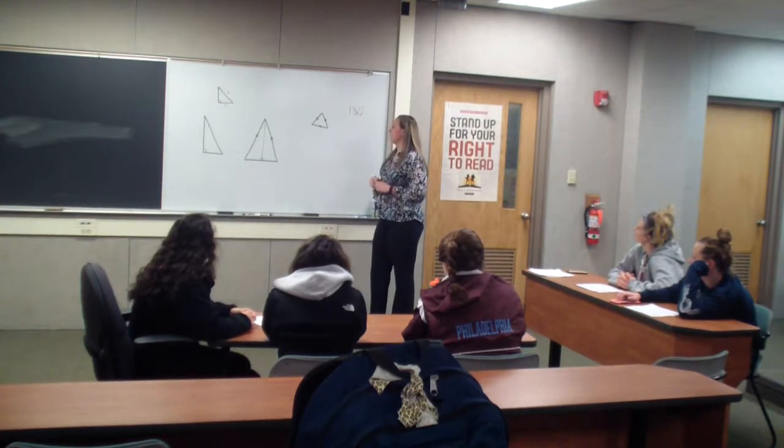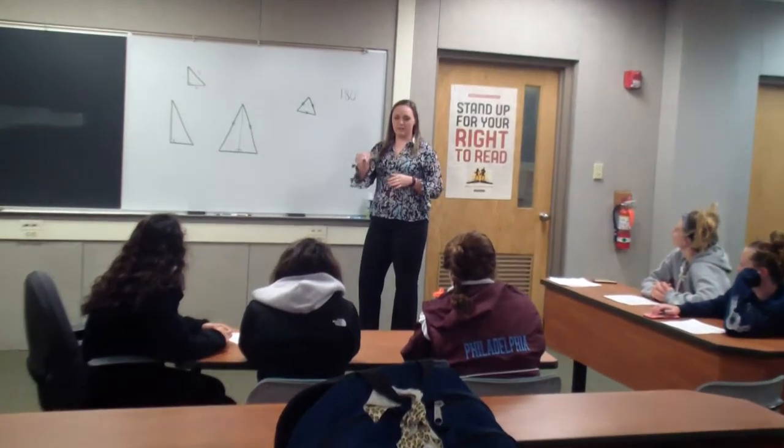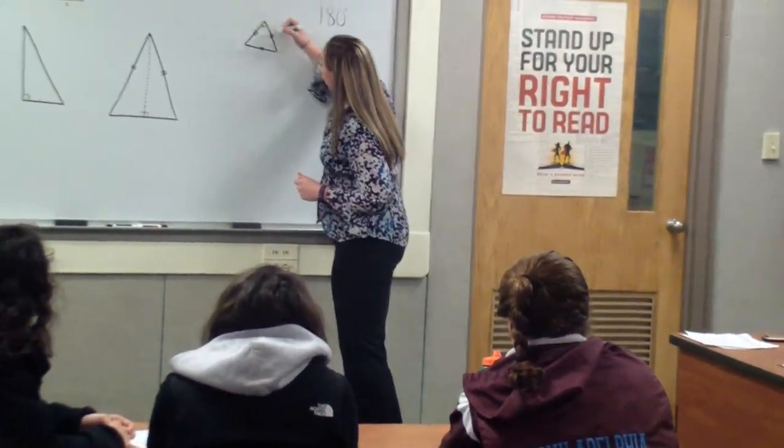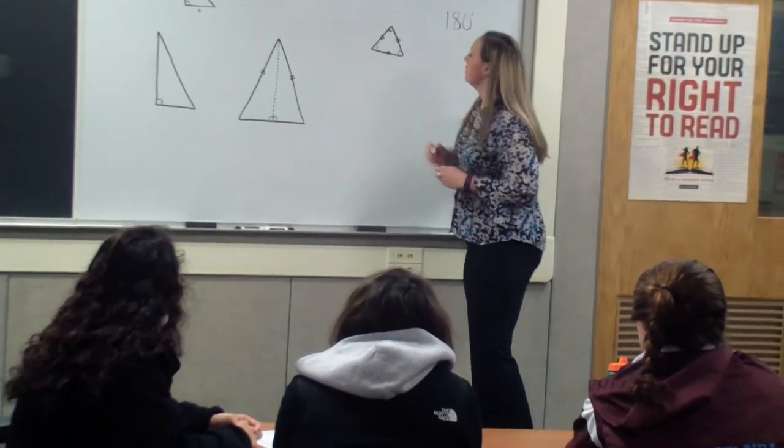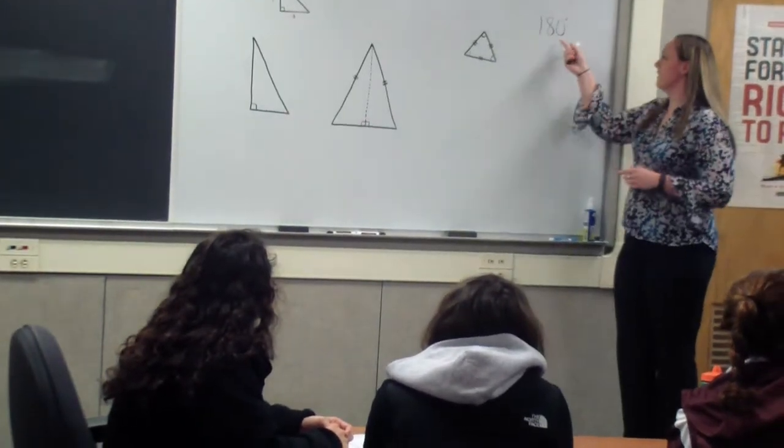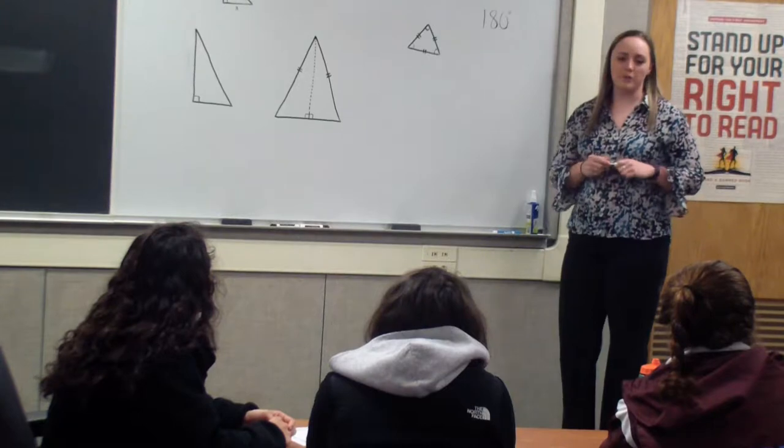So if we look at the equilateral triangle, since all three sides are the same length, all three angles have to be the same. So if there are three angles, and it's 180 degrees in the triangle, how much is each angle equal?